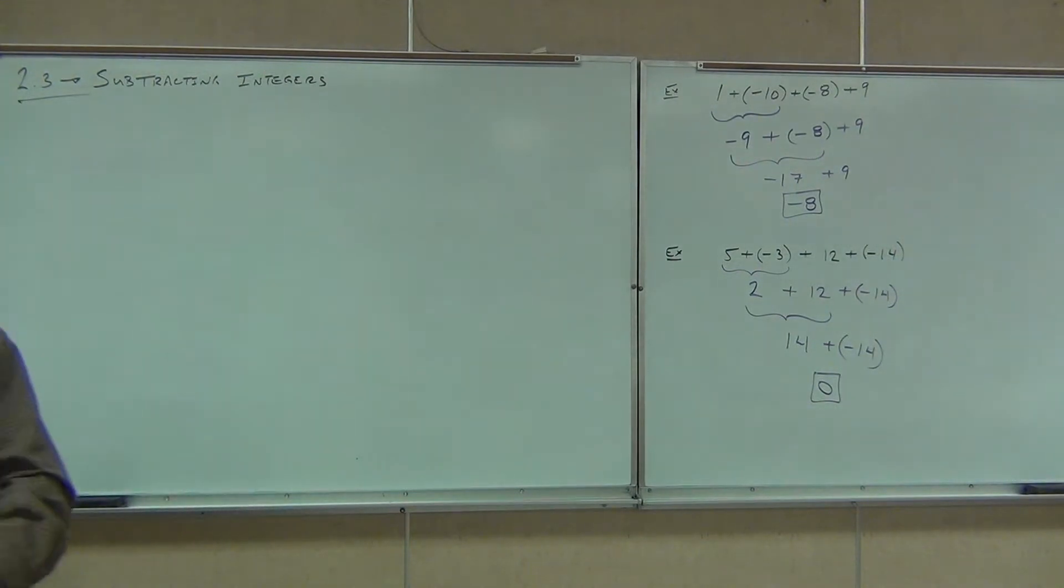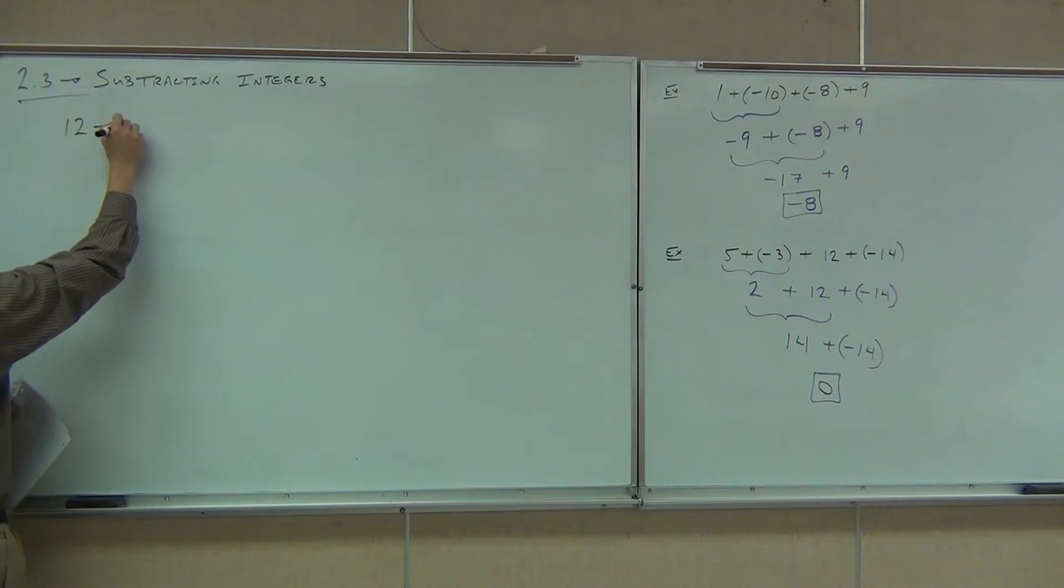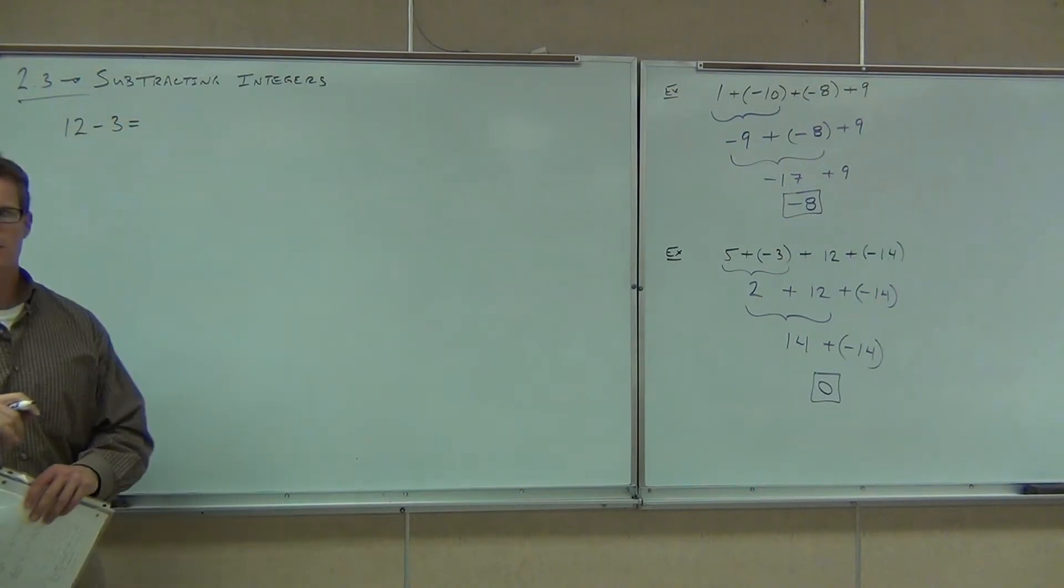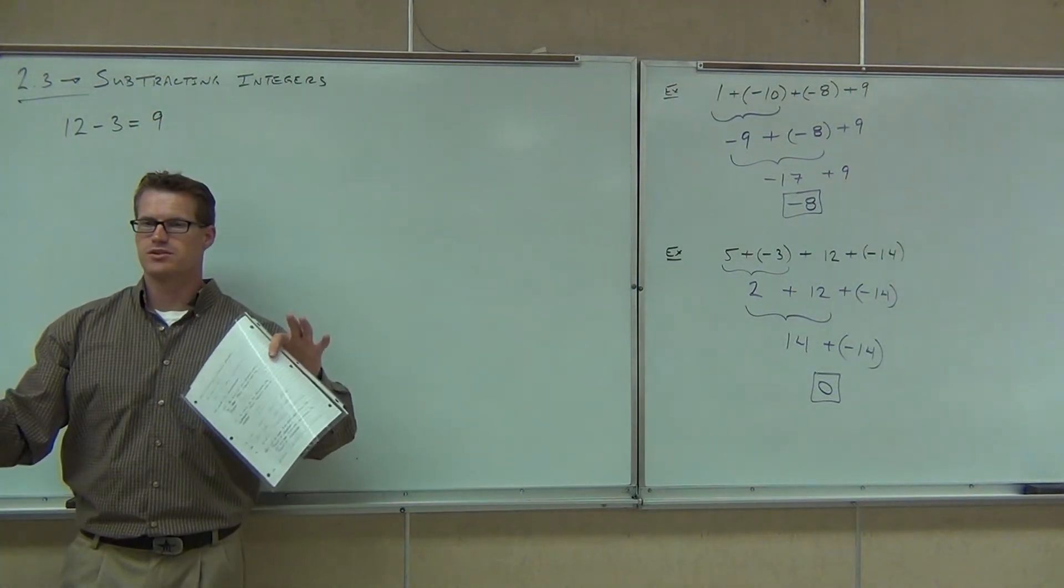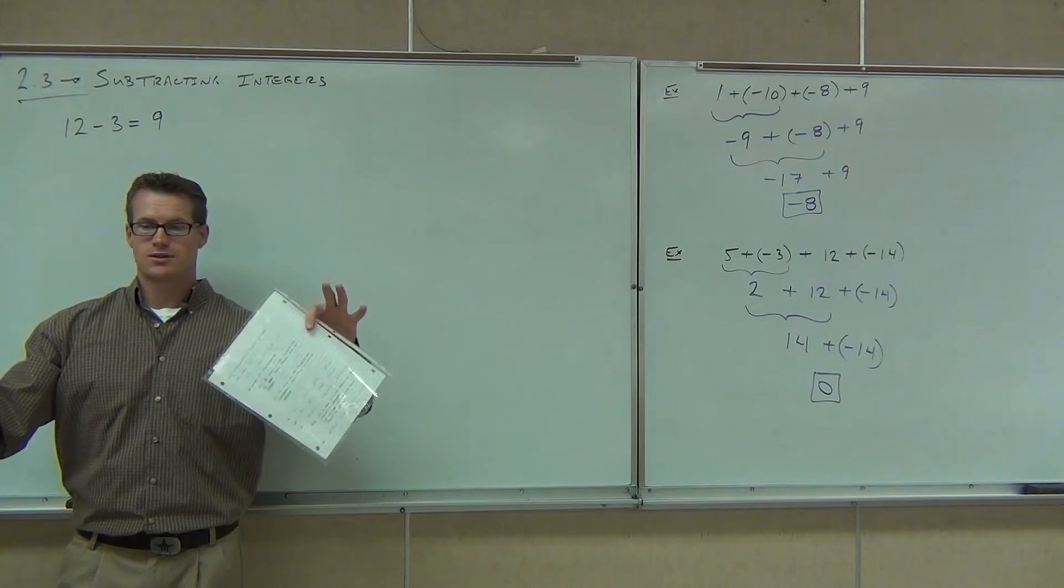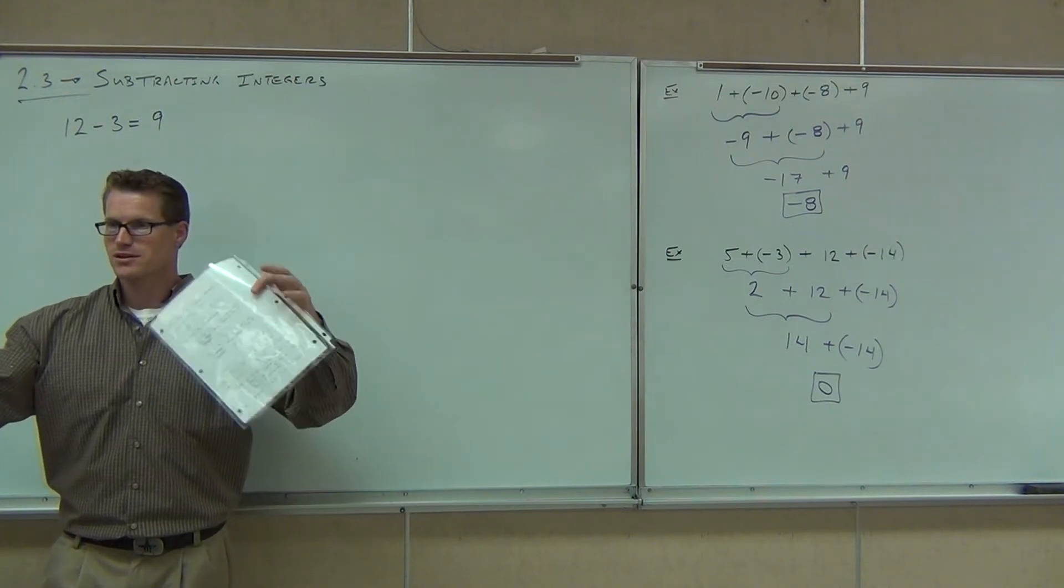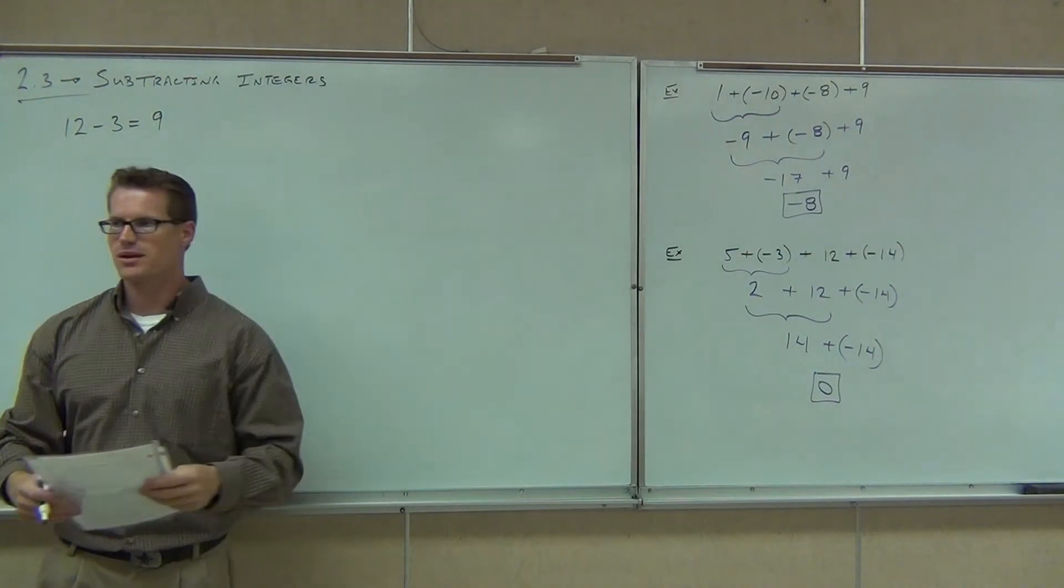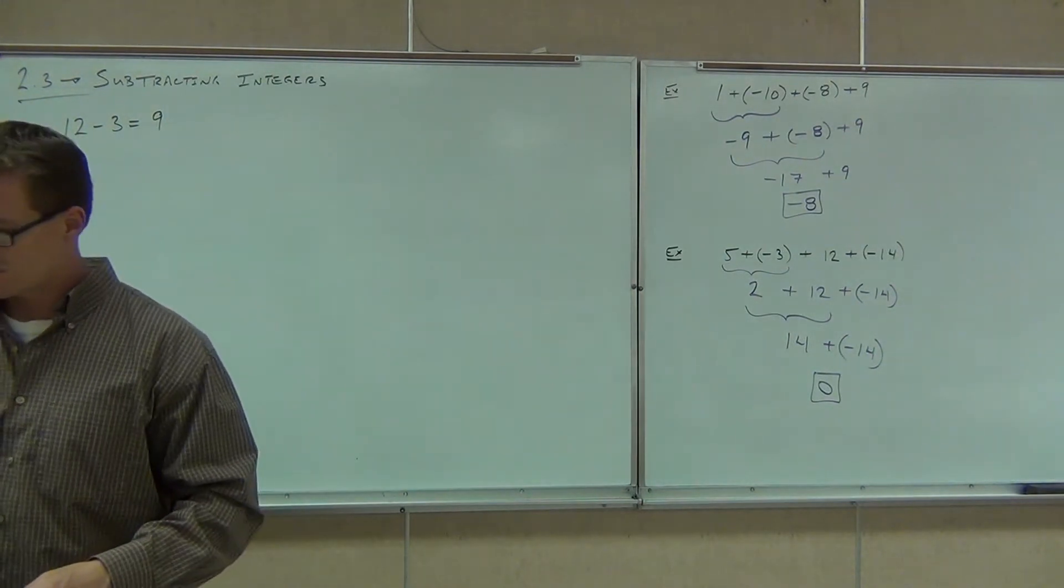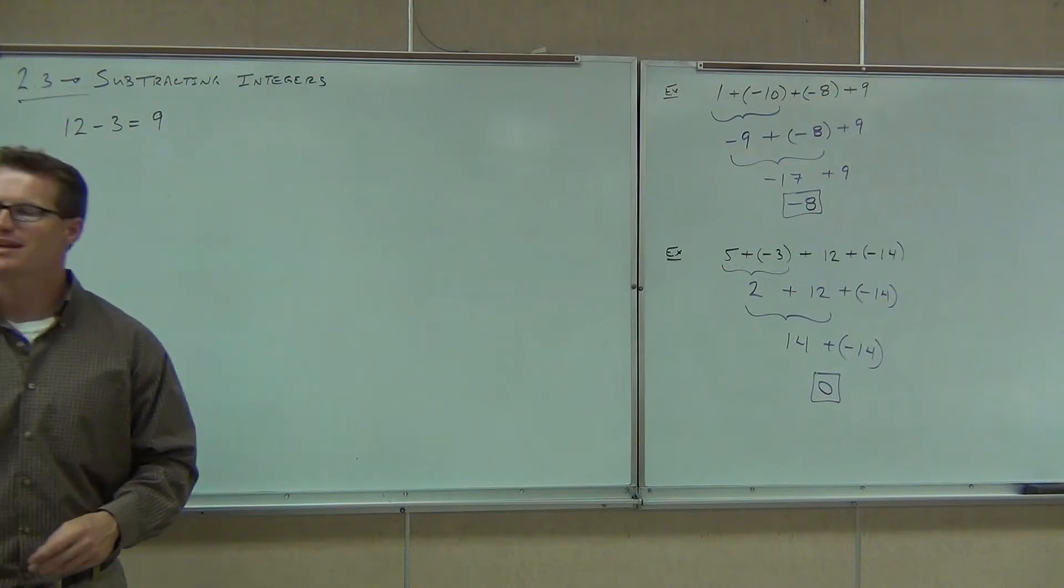Okay, so subtracting integers. We know how to subtract basic integers. We can all do things like 12 minus 3. 12 minus 3 gives us 9, right? We almost do it on our fingers. What I want you to look at is this. This is going to be kind of interesting. Check it out.